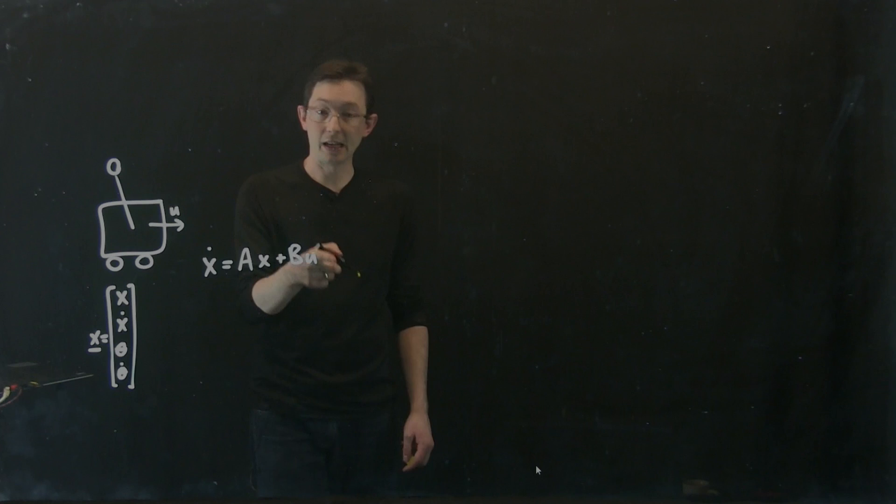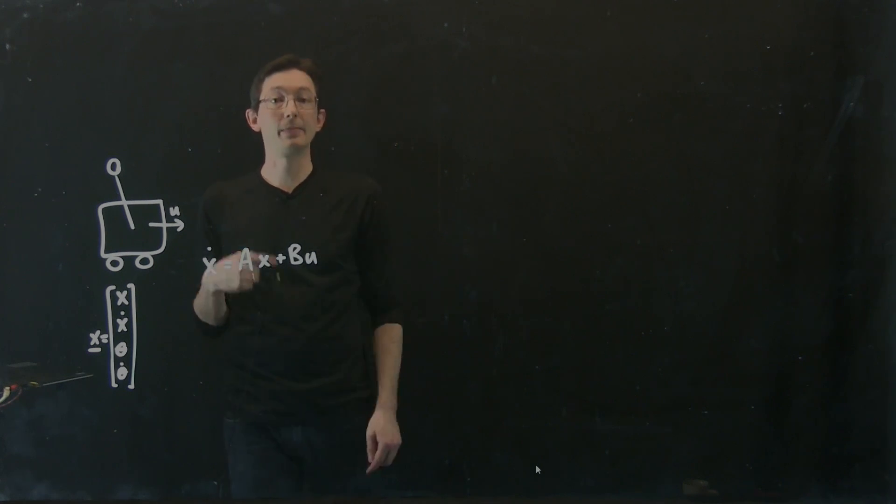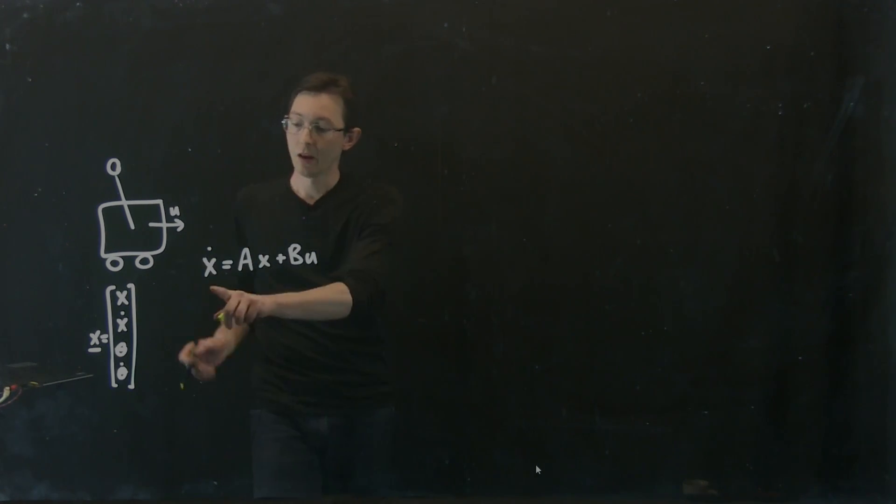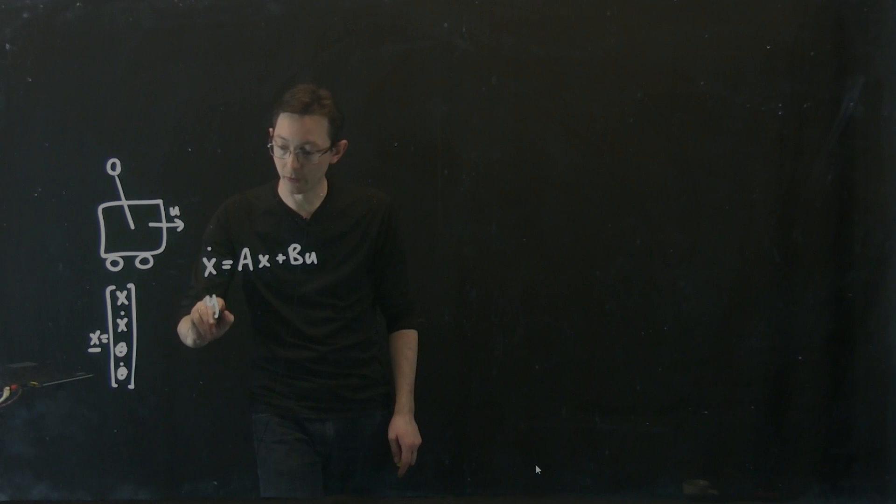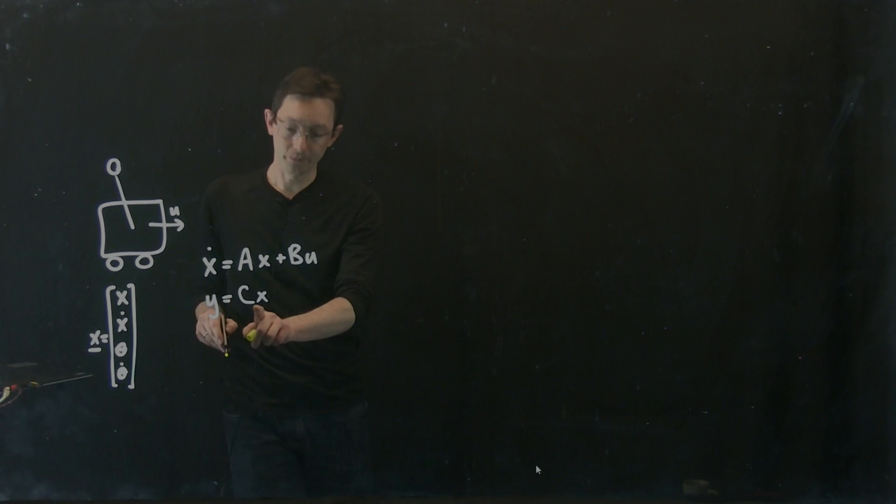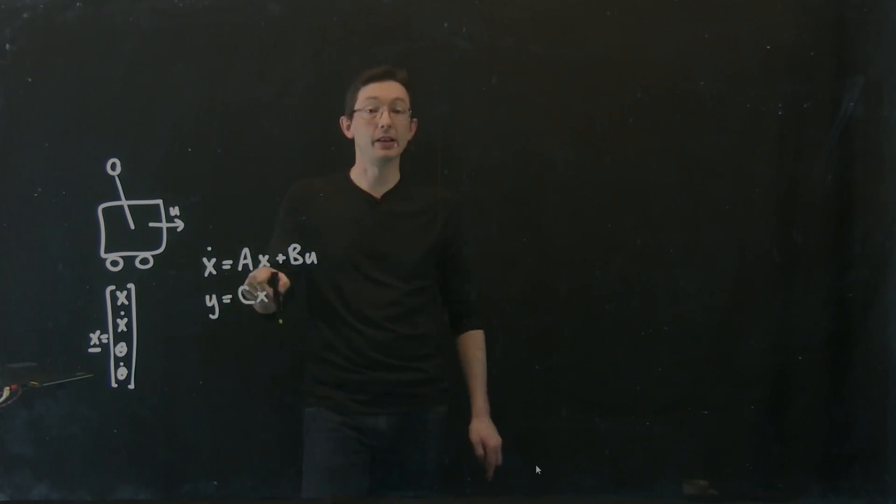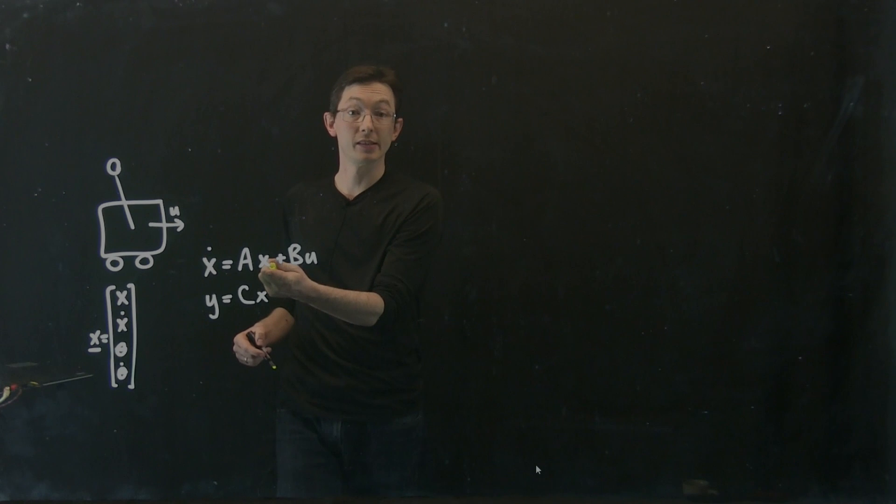We showed that you can stabilize the inverted pendulum dynamics by developing a controller, but now we're going to be looking at when we have measurements y equals Cx. For what measurements y equals Cx can I back out what the full state of the system was?